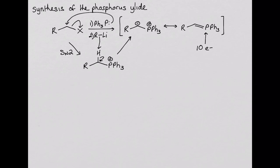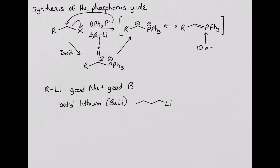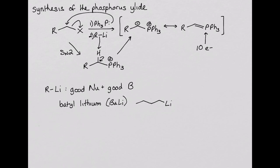Finally, a comment on the use of the organolithium reagent in this reaction. Remember that organolithium reagents are very good nucleophiles, but they're also very strong bases. Typically, the organolithium reagent used for the formation of phosphorus ilids is called butyl lithium. A carbon adjacent to the positively charged phosphorus in the intermediate of this synthesis is very acidic, and the butyl lithium acts as a base to deprotonate this position.